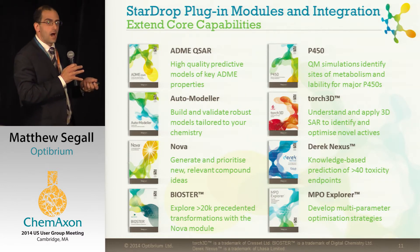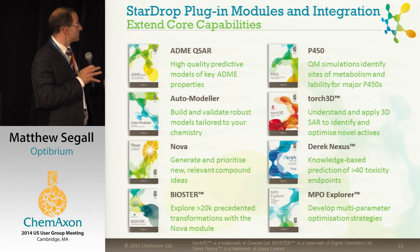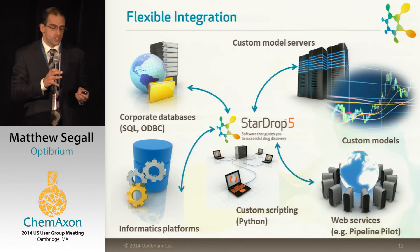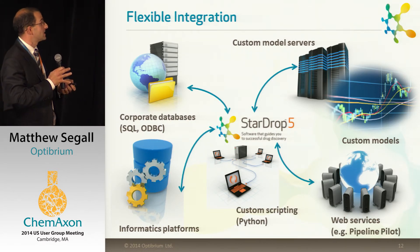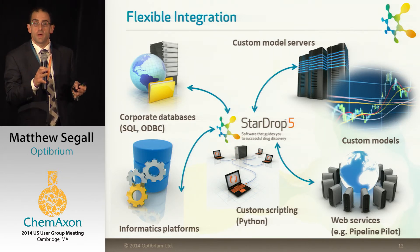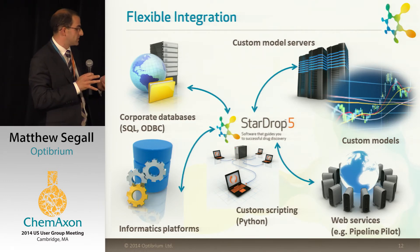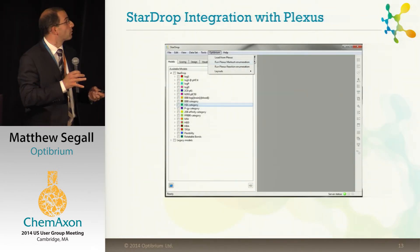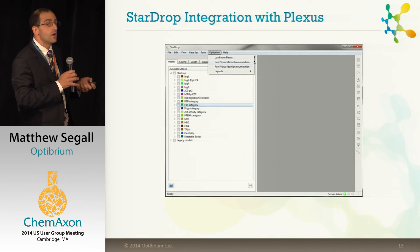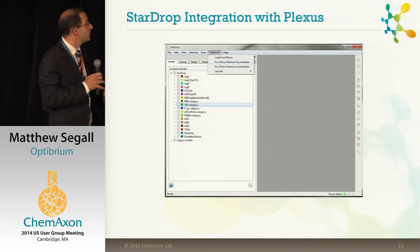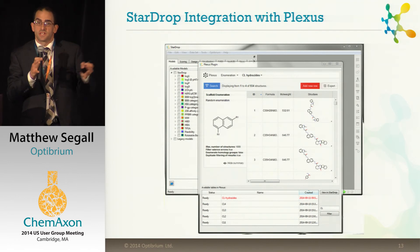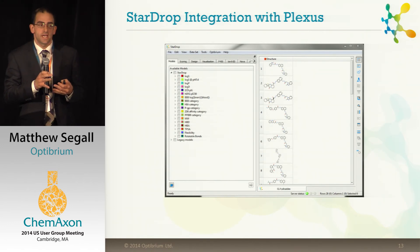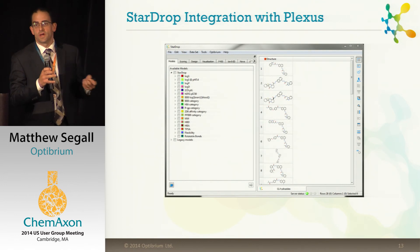If you want to know more, I'd be happy to tell you. Some of these plug-ins are through collaborations with other organizations: Biostar with Digital Chemistry, Torch3D with Cresset, Derek Nexus with LHASA Limited. That really shows the kind of integration that you can do — no piece of software can sit in isolation. There are a whole range of APIs for integration of your own methods, for integration of other platforms, both client and server side. We use Python as our standard scripting language. And that leads to the final point, which is why I'm here today: we're working very closely with ChemAxon to integrate StarDrop with their Plexus package, primarily initially around library enumeration, so that you can run Plexus within StarDrop, interact with Plexus in exactly the same way as you would expect, and then return those results instantly within StarDrop to apply predictive models, bring in data, and guide decisions about library design.